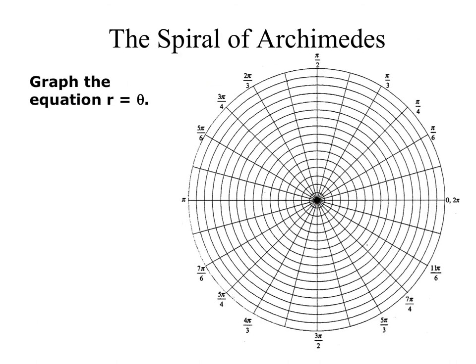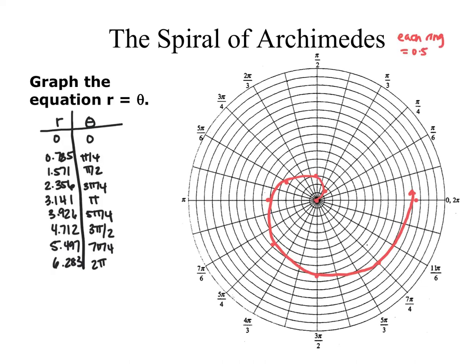Looking at the next special polar equation, r equals theta — go ahead and pause the video and use an r-theta table to help you graph this. Since r equals theta, whatever your angle is, your radius is the same value. Plugging into a calculator to get decimals makes it easier to graph. As the name suggests, it ends up being a spiral.